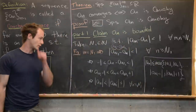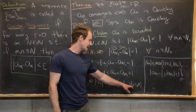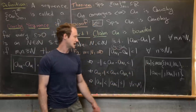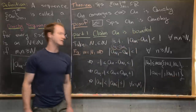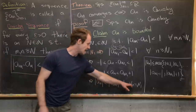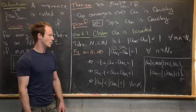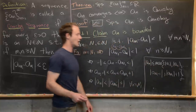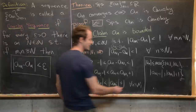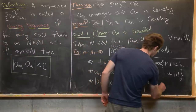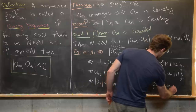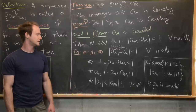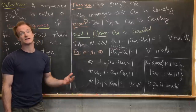If n ≥ N₁ then |a_n| < |a_{N₁}| + 1, and if n < N₁ then a_n is less than the maximum of all those terms. So we've shown that a_n is bounded, which is the first part of the reverse direction of this proof.